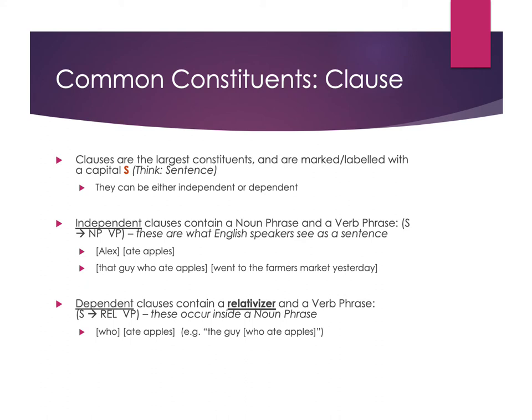In the example 'the guy who ate apples went to the farmer's market yesterday,' I have my noun phrase as the subject and then everything else in the verb phrase. But within that noun phrase, 'who ate apples' also has a verb in it — it's still part of the noun phrase, part of the subject. This is a dependent clause that has 'who' as the relativizer, where 'who' links up to 'that guy.' The relativizer is sort of equal to whatever noun is in the main noun phrase. Then you have the verb phrase 'ate apples,' with a verb and a noun phrase inside.